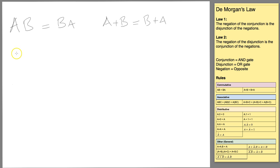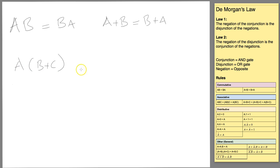The distributive law is basically the factoring law. Any common variable can be factored from an expression just like you normally would. For example, A·(B + C) is the same as A·B + A·C — those things are exactly the same.